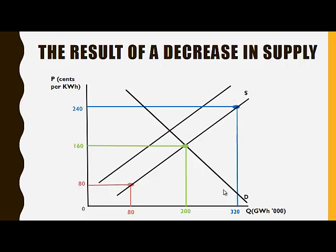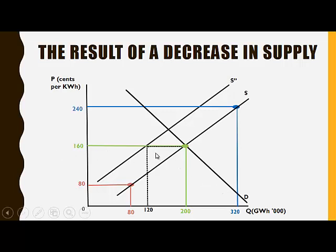Let's look at a decrease in supply to S-accent. As you can see, at the original equilibrium price of 160, the quantity supplied will now be 120. The quantity demanded remains at 200, therefore there is now excess demand.